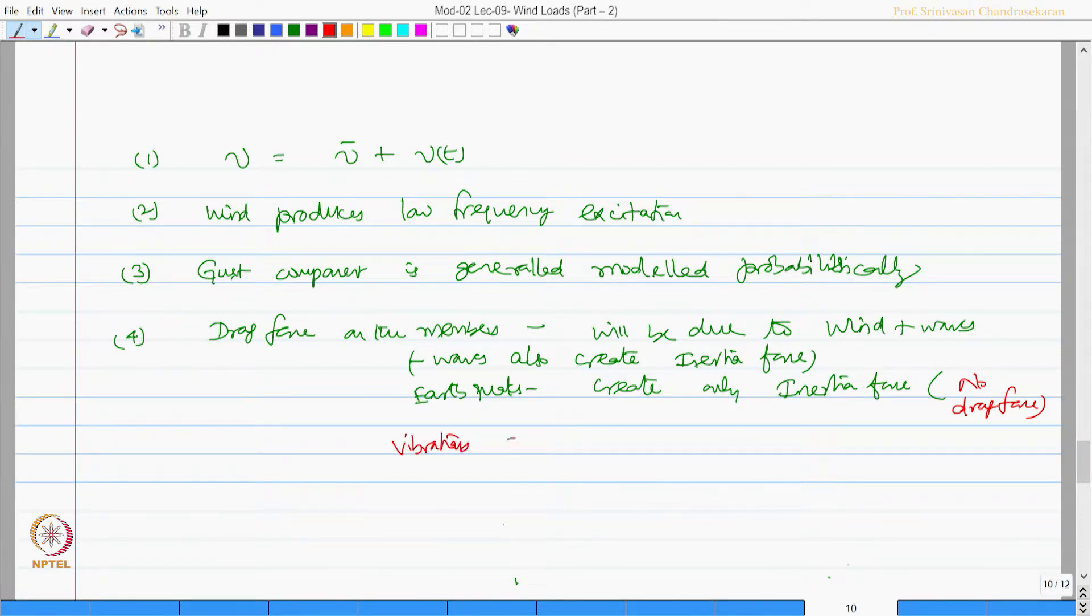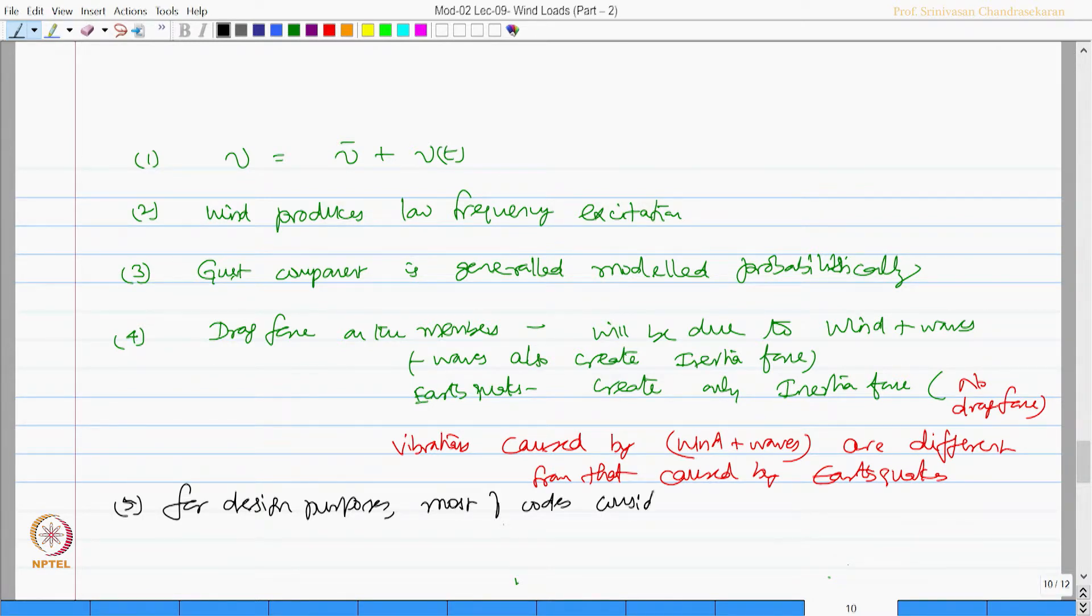Vibrations caused by wind and waves are different from that caused by earthquakes. The good news is that for design purposes most of the codes consider wind as quasi static process.